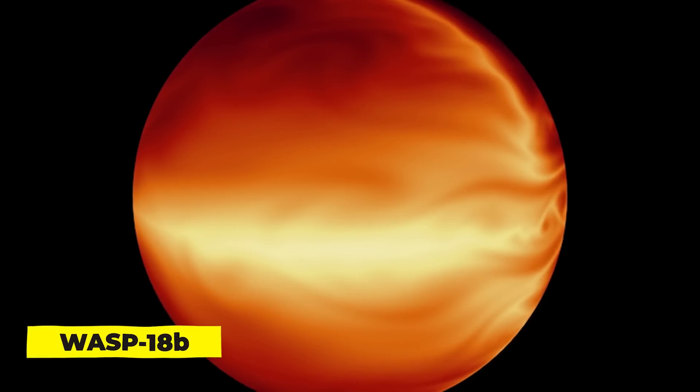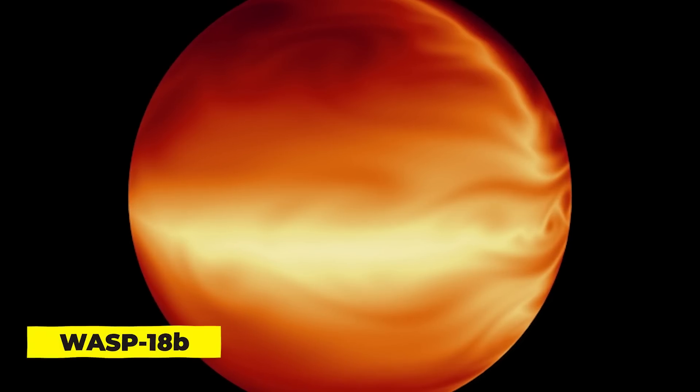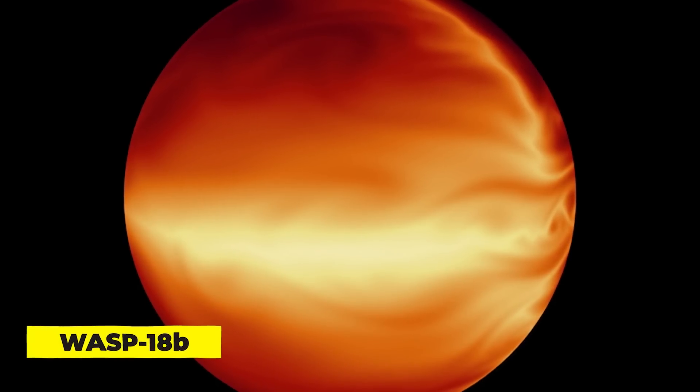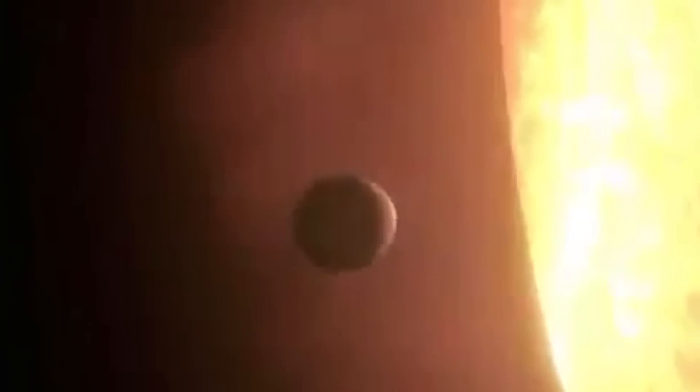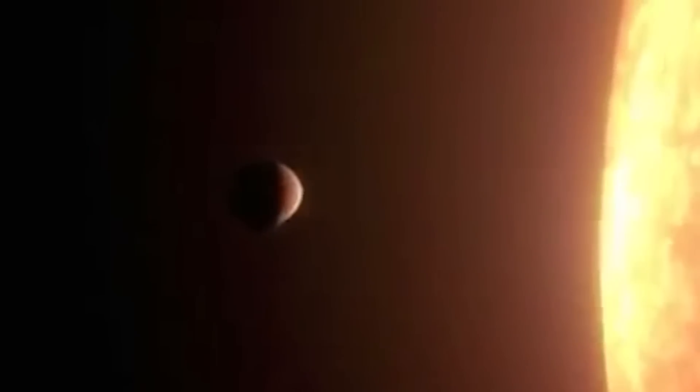WASP-18b. The planet WASP-18b is one that ideally shouldn't last very long. It is ten times the size of Jupiter, completes one complete circle around its star in less than 24 hours, and will shortly spiral onto the surface of its searingly hot Sun. The planet WASP-18b is too huge and too close to its Sun for comfort, according to the laws of physics, and it orbits a star 1,000 light-years away from Earth.